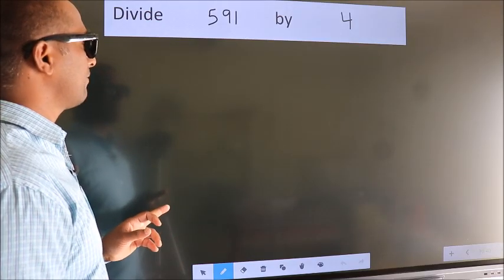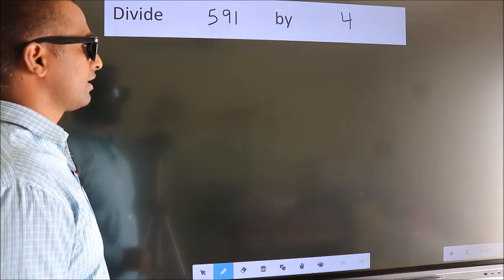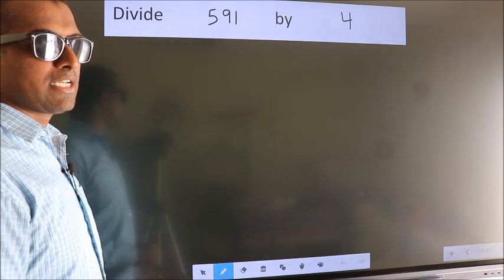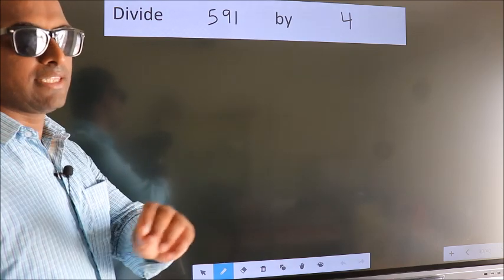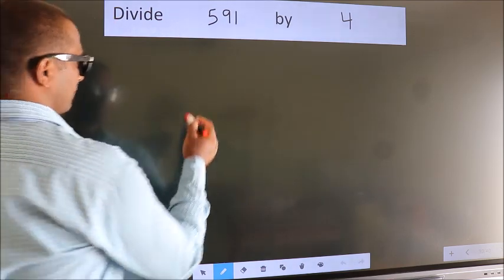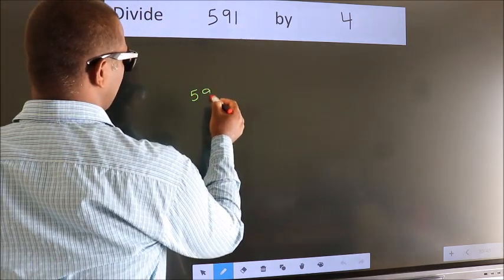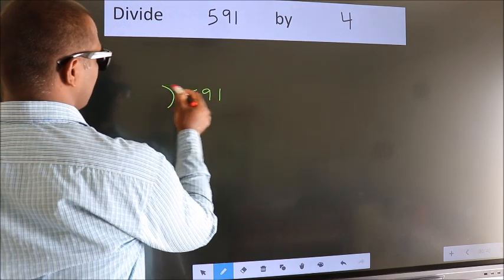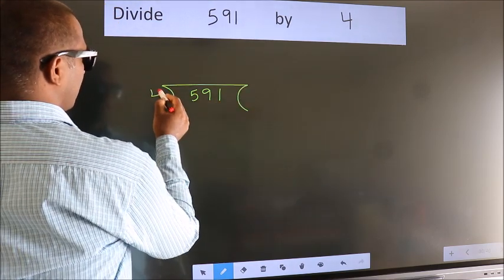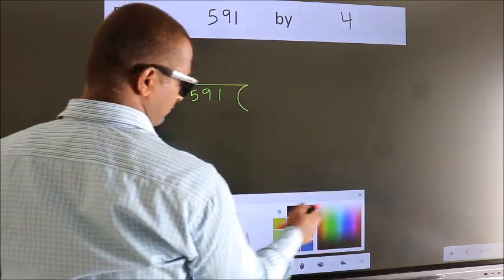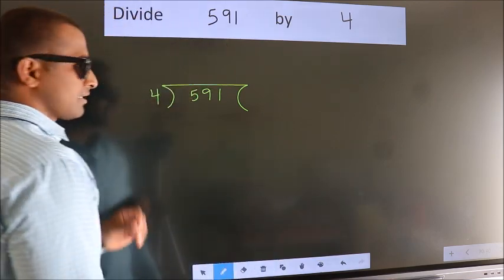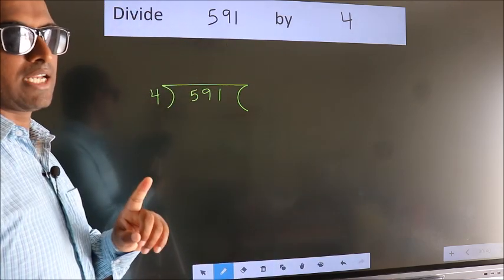Divide 591 by 4. To do this division, we should frame it in this way. 591 here, 4 here. This is your step 1.